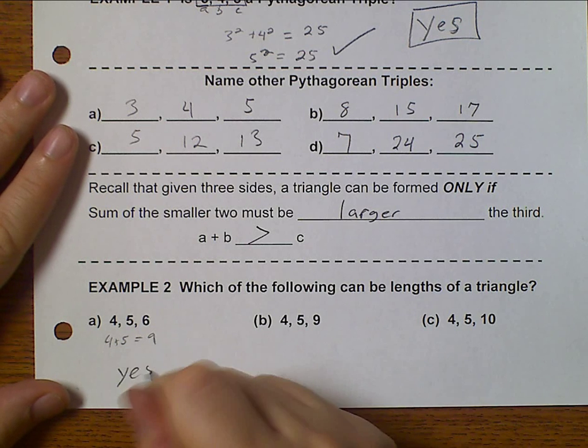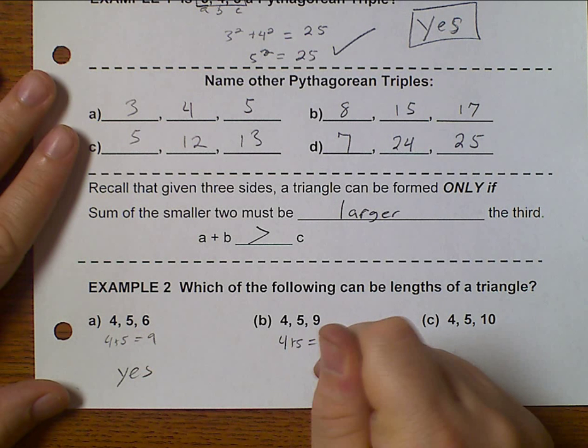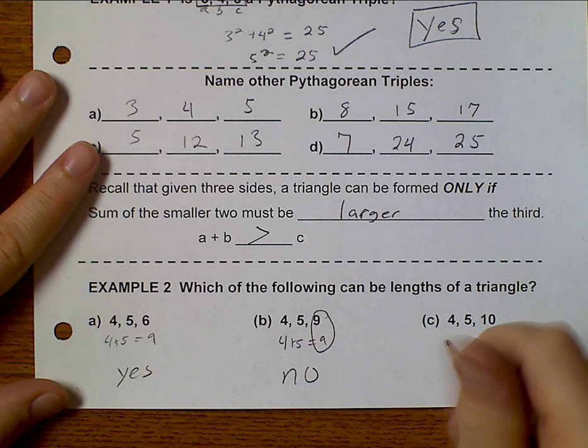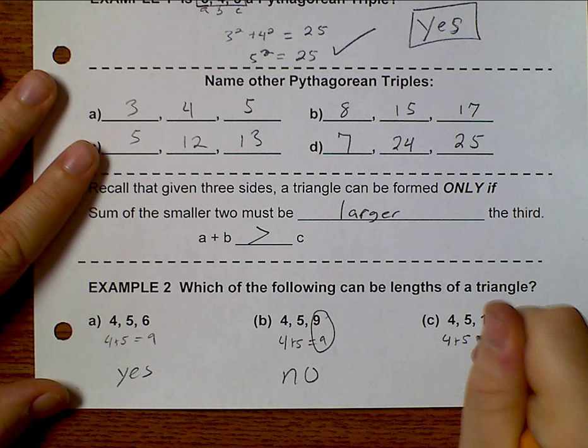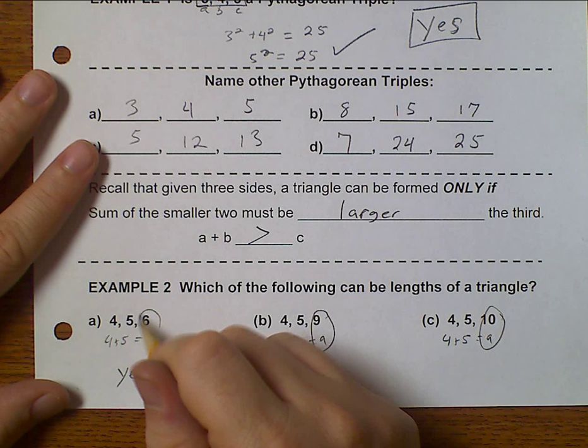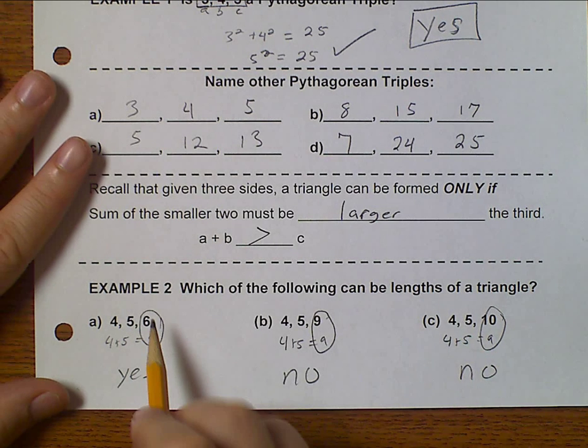So that would be a yes. 4 plus 5 equals 9, that would be a no. 4 plus 5 equals 9, that would be a no. 9 is greater than 6, so that's why that one checks out.